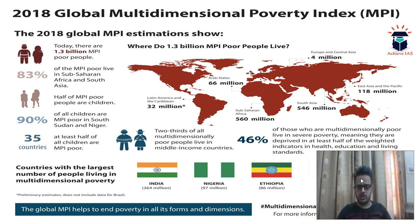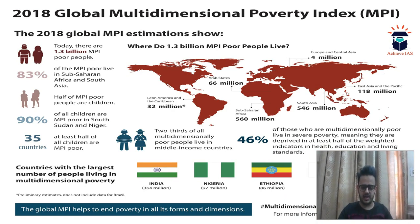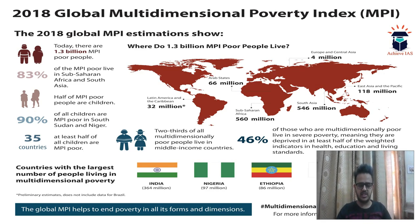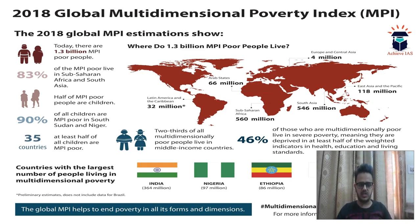The 2018 report shows that multi-dimensional poverty is quite high in our world. Nearly 1.3 billion people — that is 130 crore — are multi-dimensionally poor, meaning they are unable to meet even one-third of the basic needs mentioned in the MPI framework. This is a totally deplorable condition.